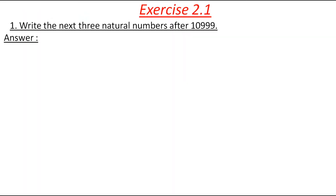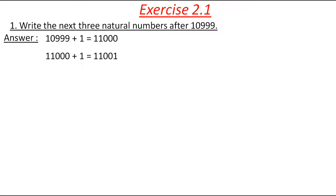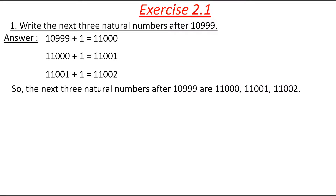Here, this is the first question given in Exercise 2.1: Write the next three natural numbers after 10,999. As we all know, to find the next numbers, we have to add 1 to the given number. So, 10,999 + 1 = 11,000; the next is 11,001; and the next is 11,002. Therefore, the next three natural numbers after 10,999 are 11,000, 11,001, and 11,002.